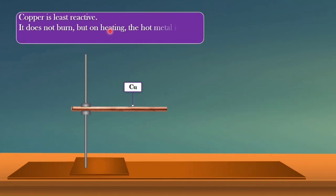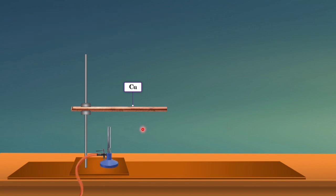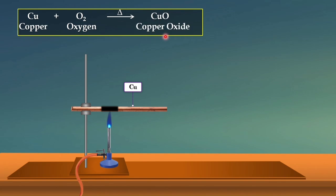Copper is least reactive, so it does not burn. But on heating, the hot metal is coated with a black scarlet layer of copper oxide. Since copper is lower in the reactivity series, it is least reactive. When copper is heated, it does not catch fire; instead, a black scarlet layer of copper oxide forms on the metal surface.